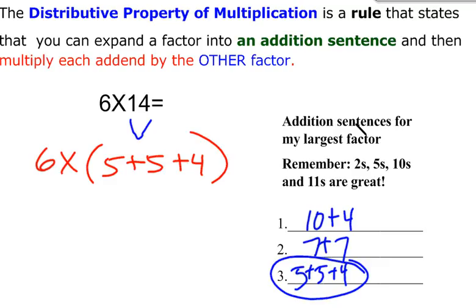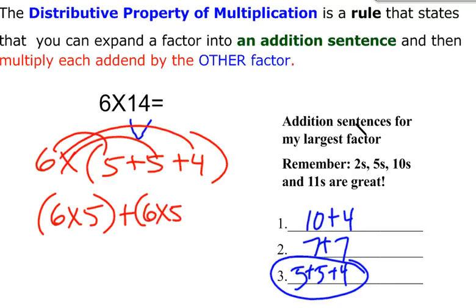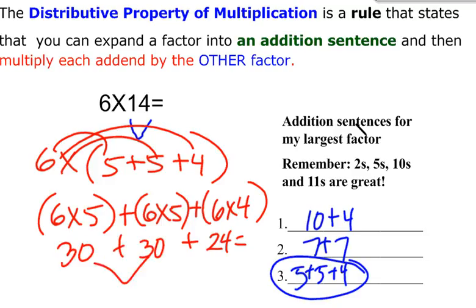But then I have to remember to distribute. I need to distribute the 6 and multiply the 6. So if I have 6 times 5 plus another 6 times 5 plus another 6 times 4. 6 times 4 is 24. 6 times 5 is 30. And 6 times 5 is 30. I can combine 30 and 30, which is 60. Then I'm going to combine the 60 with the 24. 60 plus 24 is 84. So my product is 84.